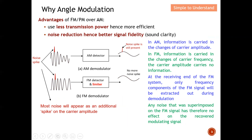Why do we need to use angle modulation over amplitude modulation? Let's go through the advantages of FM or PM over AM. Firstly, angle modulation — meaning frequency modulation or phase modulation — requires less transmission power, making it more effective. Another crucial advantage of FM or PM over AM is noise reduction, resulting in better signal fidelity, which means the sound will be much clearer.